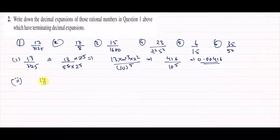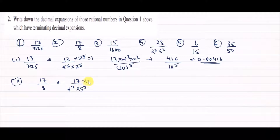Now we will do the second question in the same way. The second question is 17 upon 8. Now, 8 is 2 to the power 3. So we have 17 upon 2 to the power 3. What do we have to multiply? We multiply by 5 to the power 3 over 5 to the power 3, because we want to make the denominator 10 to the power 3.